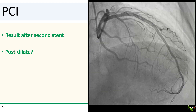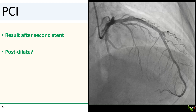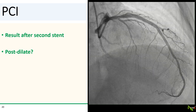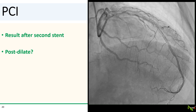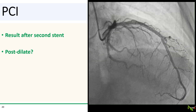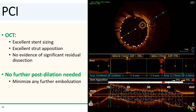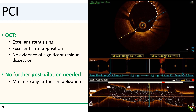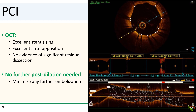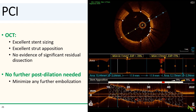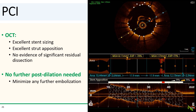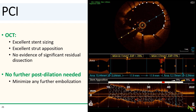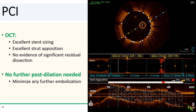Should we post-dilate at this point? Even though it looked like a bad edge dissection caused the no reflow, we were still concerned there might be a component of thrombus embolization as well, and we certainly did not want a post-dilation balloon to embolize more thrombus and cause another round of no reflow. To help us decide, we did OCT. On OCT, things looked great — stent sizing was excellent, with excellent strut apposition and no evidence of significant residual dissection. So we decided post-dilation was not going to be necessary. There was some swirl artifact but really not a lot of residual thrombus either.